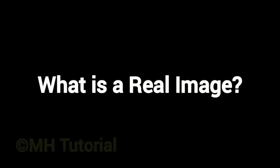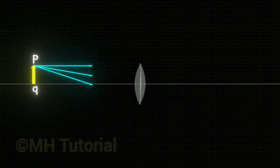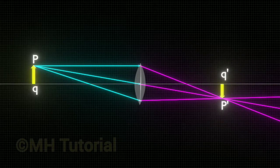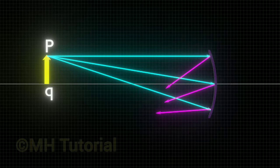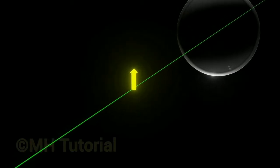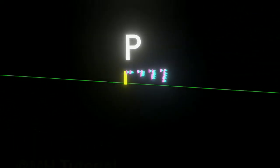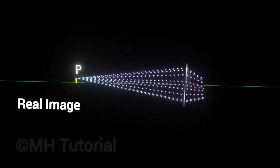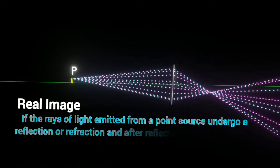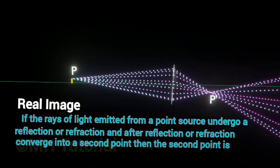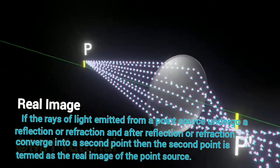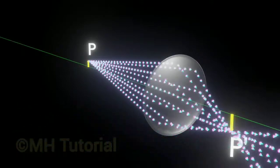Now, what is a real image? In situation 4 with convex lens and in situation 5 with concave mirror, we see that the rays of light are meeting together or converging at one point after reflection or refraction. The images formed in these procedures are called real images. That is the definition of real images: if the rays of light emitted from a point source undergo reflection or refraction and after that converge into a second point, then the second point is termed as the real image of the point source.